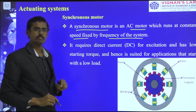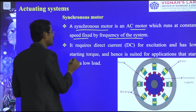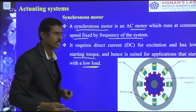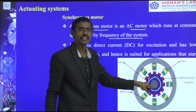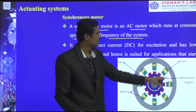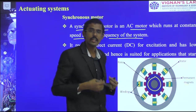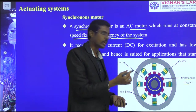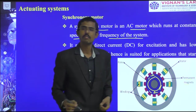It requires a direct current for starting, then automatically goes on rotating. It has a low starting torque and hence is suited for applications that start under a low load. The rotor at the center contains multiple permanent magnets, and the stator outside supplies a magnetic field. Due to that magnetic field the rotor is attracted and starts to move, and rotation keeps on occurring.